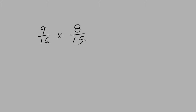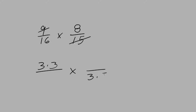I can see that 9 and 15 are both divisible by 3, so the 9 can become 3 times 3 and the 15 can become 3 times 5. Also, 16 and 8 are both divisible by 8, so the 16 can become 2 times 8 and the 8 can become 1 times 8.